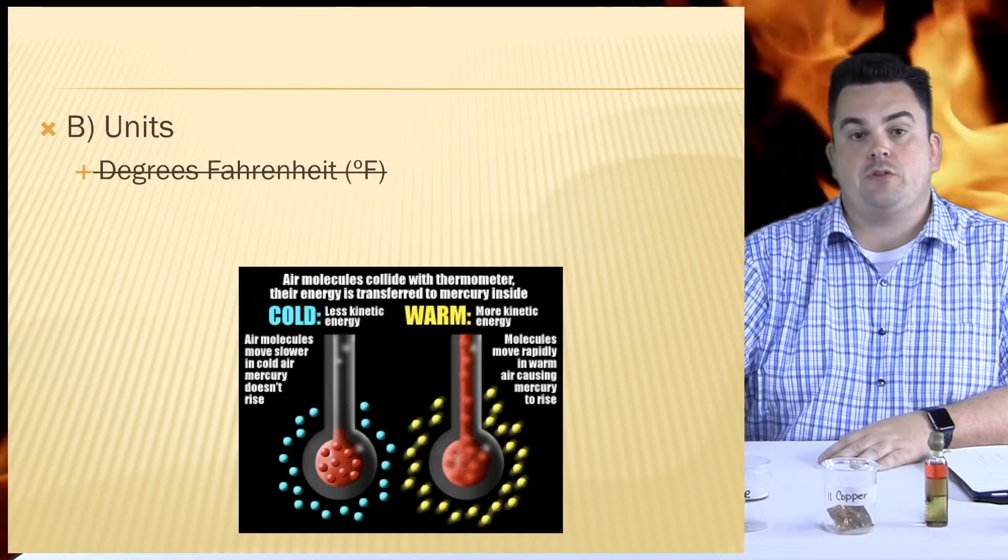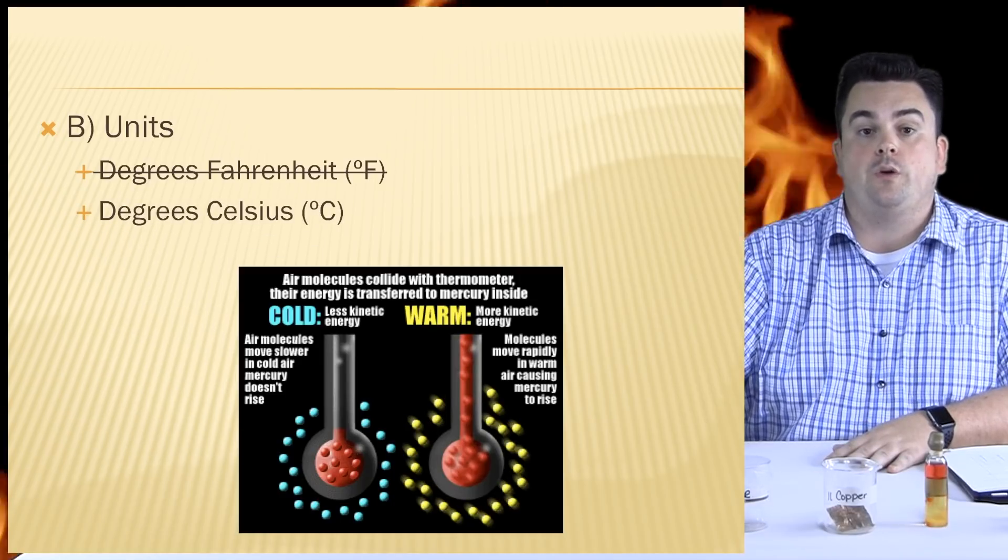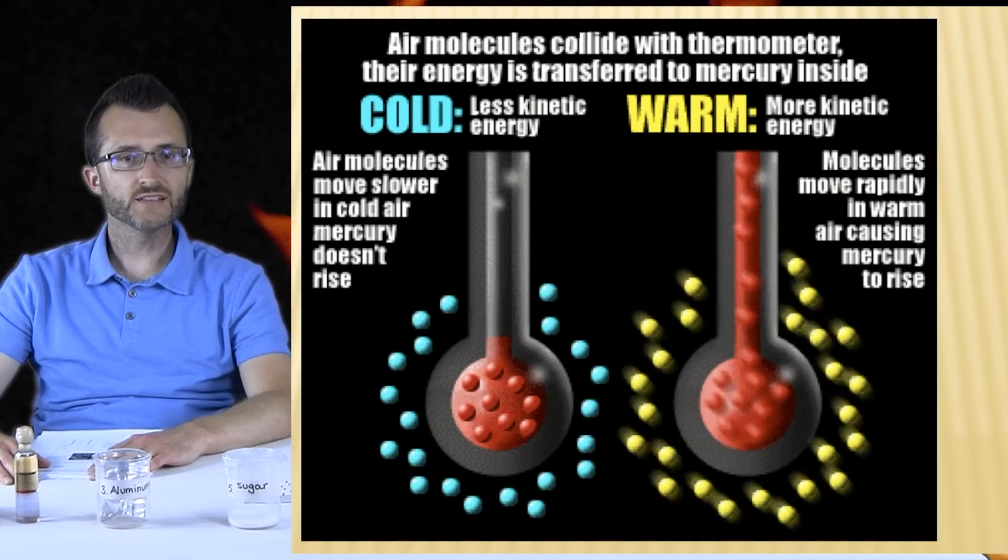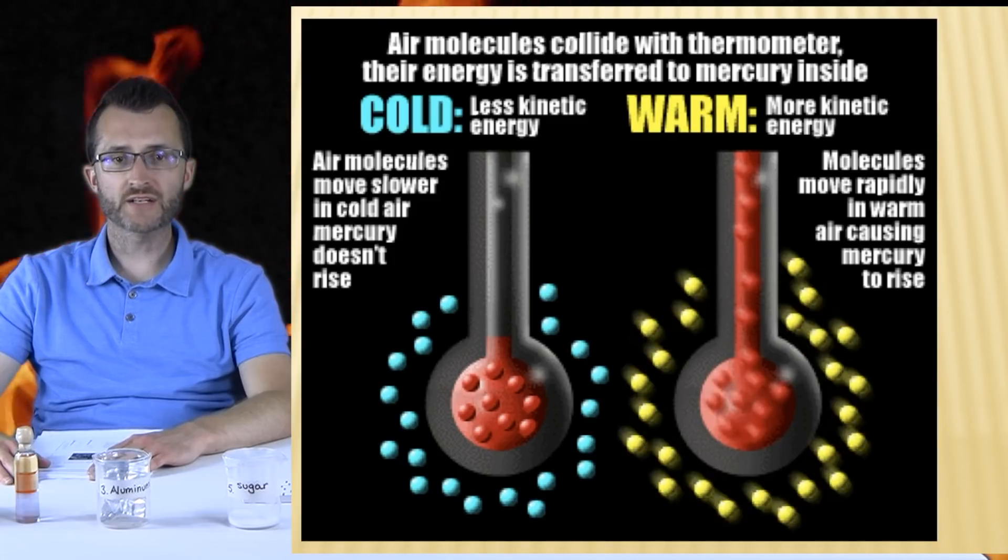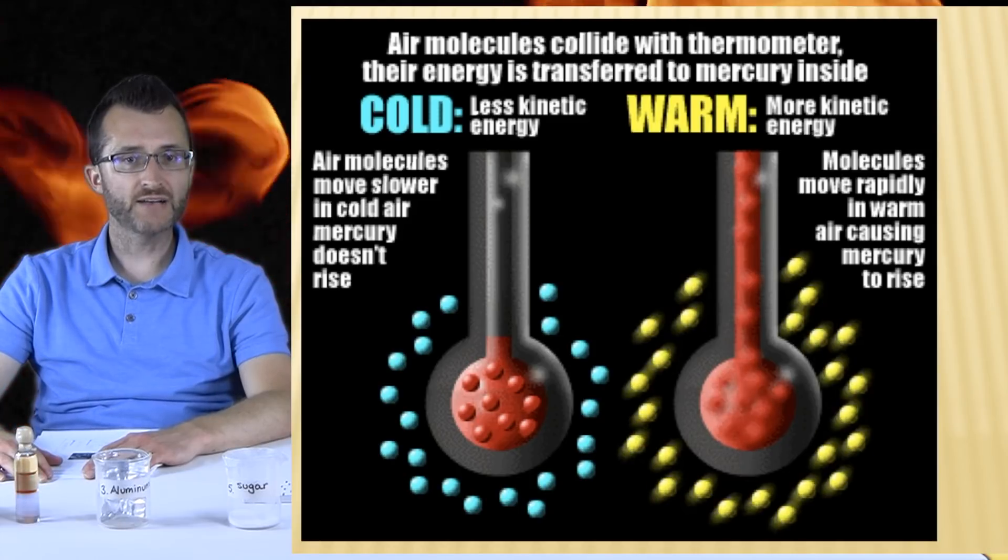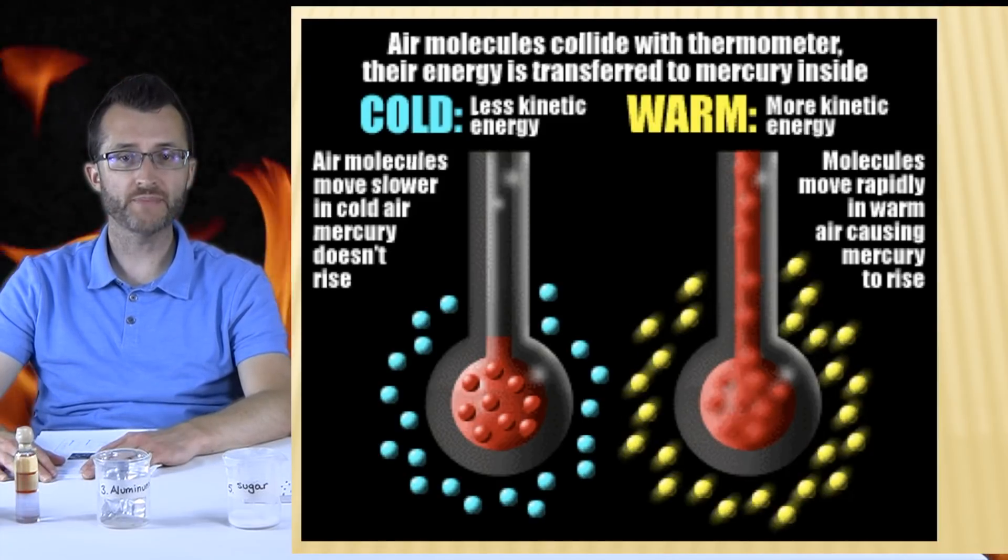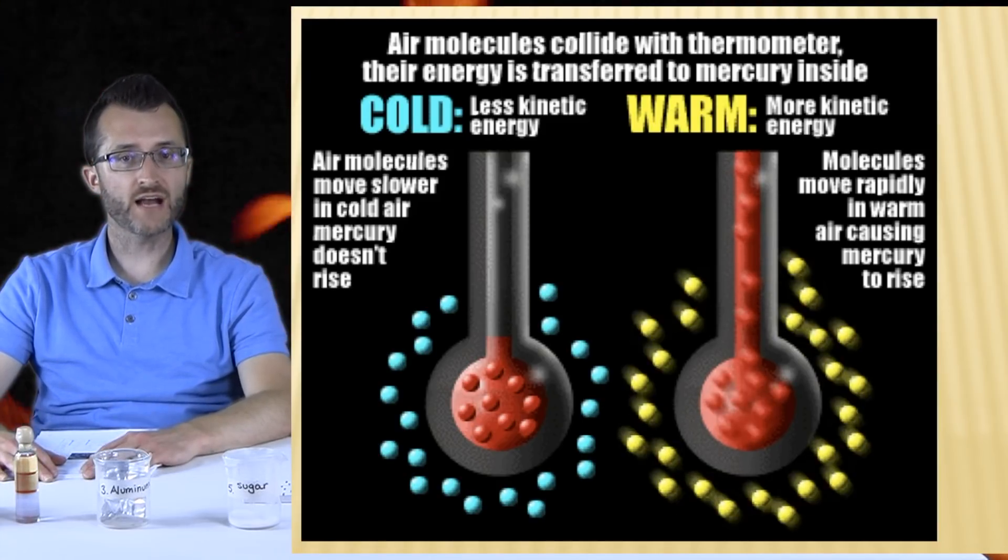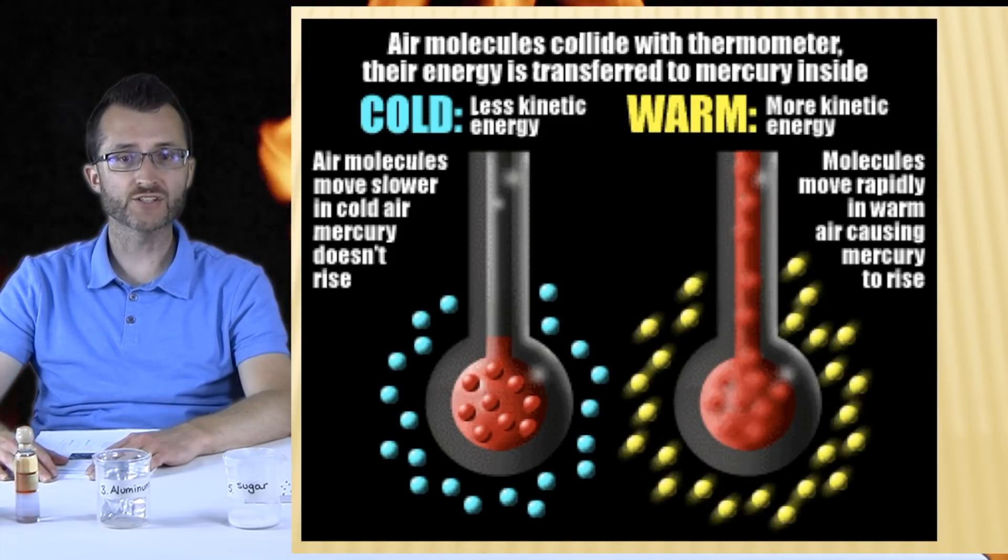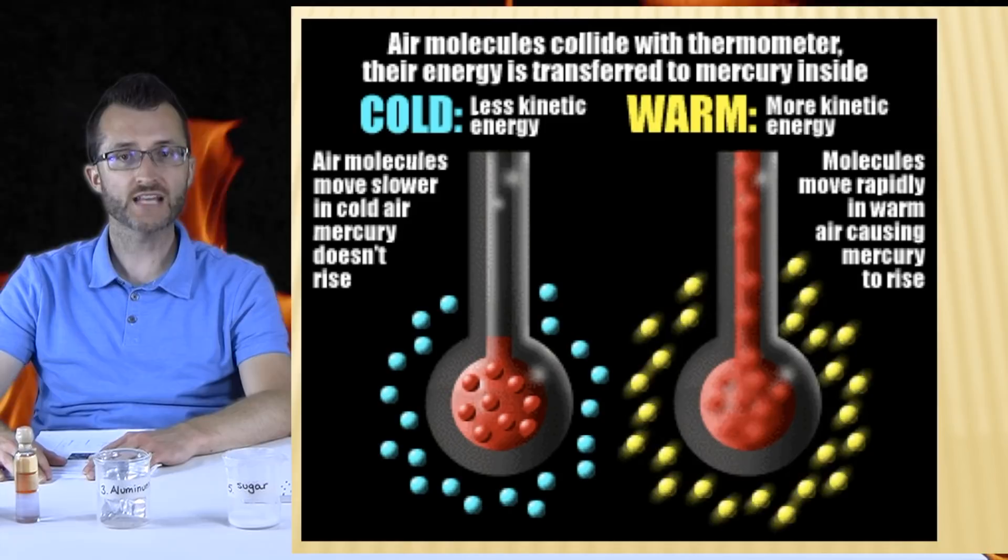Units. So in chemistry, we use units on our temperature scale. We do not use degrees Fahrenheit. We use degrees Celsius, and we also use Kelvin. Let's take a look at a thermometer. If we look at the thermometer on the left, which is surrounded by cold air, those air molecules are moving very slowly. When they collide with the thermometer, they don't make that liquid move as high up in the thermometer, giving a lower temperature. On the other hand, on the right, we have a thermometer that is in warm air. Now these particles are moving faster with more energy, and as they collide with the thermometer, they cause the liquid to rise up higher, giving a higher temperature reading.